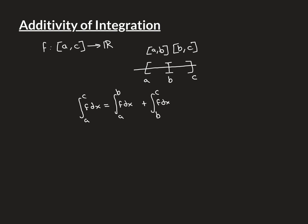Part one says that if the function is integrable over the two separate subintervals, then it is integrable over the entire interval. Part two goes the other way: if we know it's integrable over the whole interval [a, c], then it is integrable over the two separate parts. So if f is integrable over [a, c], then for any point b chosen inside the interval, the function will be integrable over [a, b] and also over [b, c]. And again the sum of those two integrals will equal the integral of f over the entire interval [a, c].